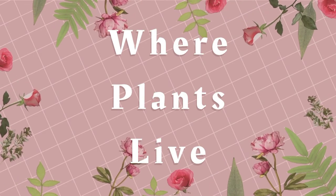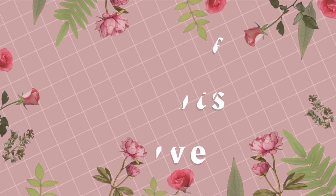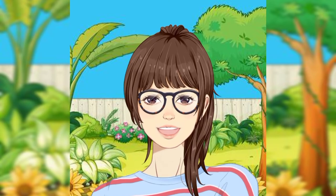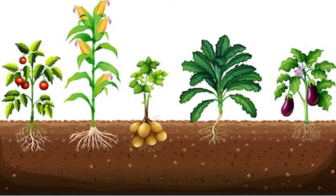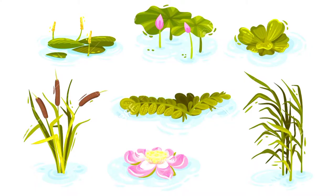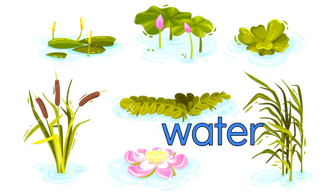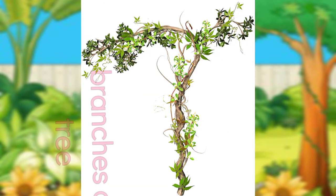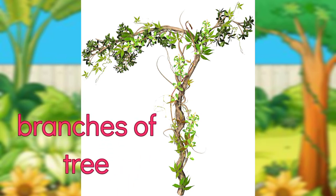Let's study where plants live. Plants grow in different places. Some plants live or grow on land. Some grow in water. Others can hang in the air or grow on branches of a tree.